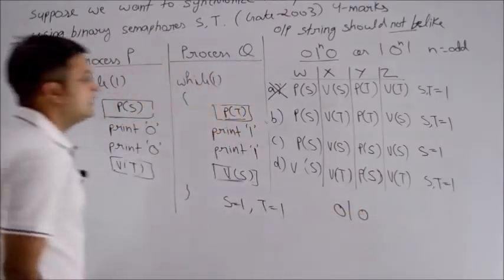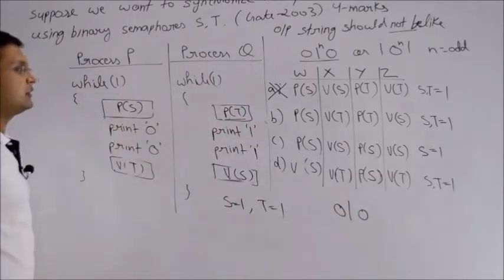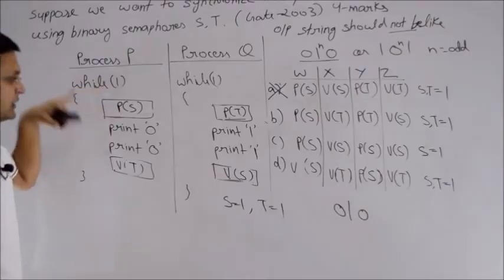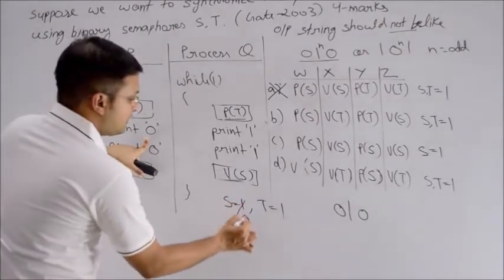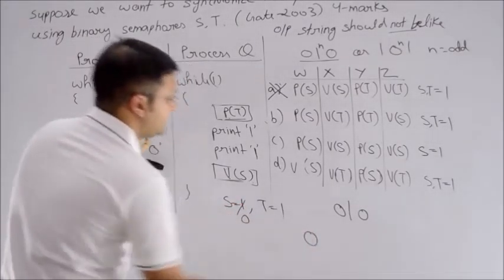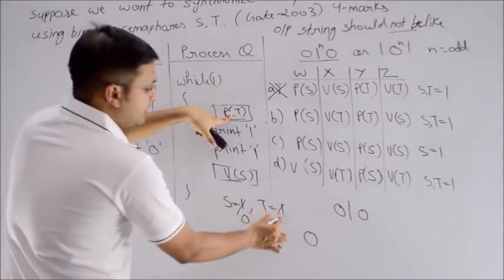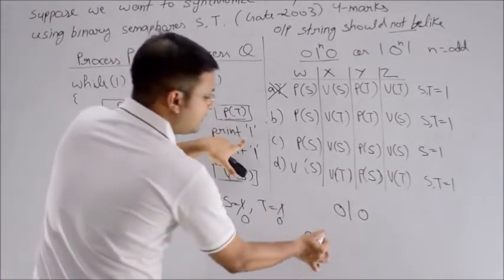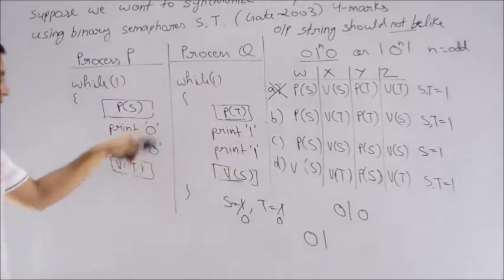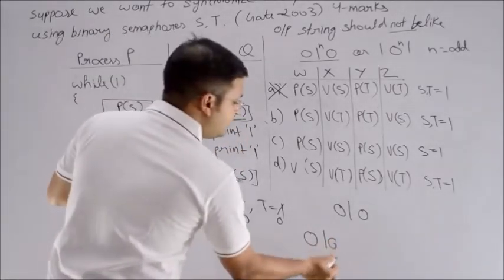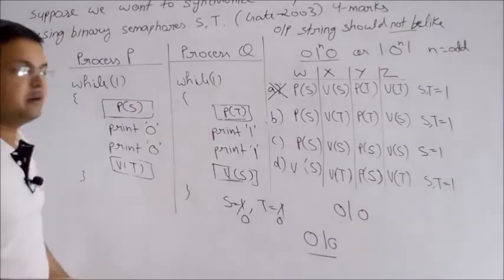Now it's a very easy task because both processes can start. Suppose you start with P again. If you start with P, you decrement S and print 0. Then you make a context switch to process Q. T's value is also 1, so decrement it and print 1. Again you context switch and print 0. And still you manage to get 0, 1, 0, which should not have been obtained.